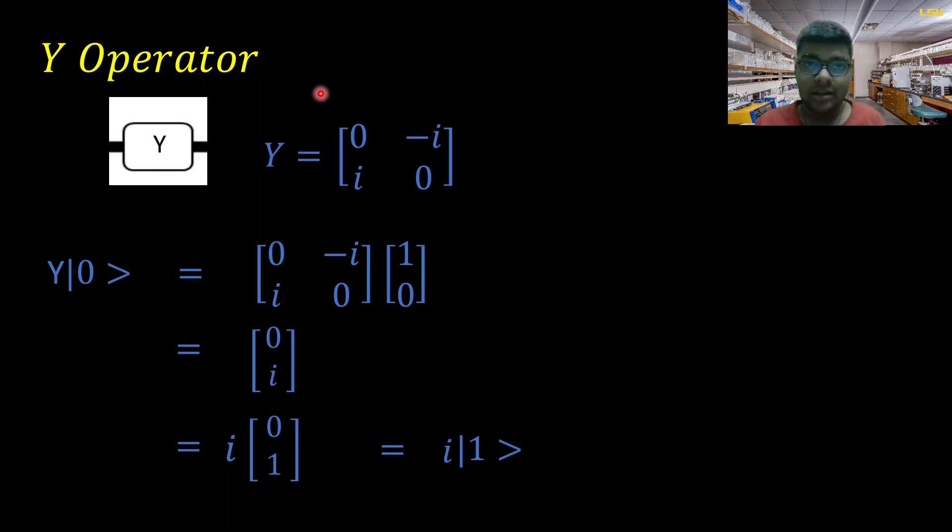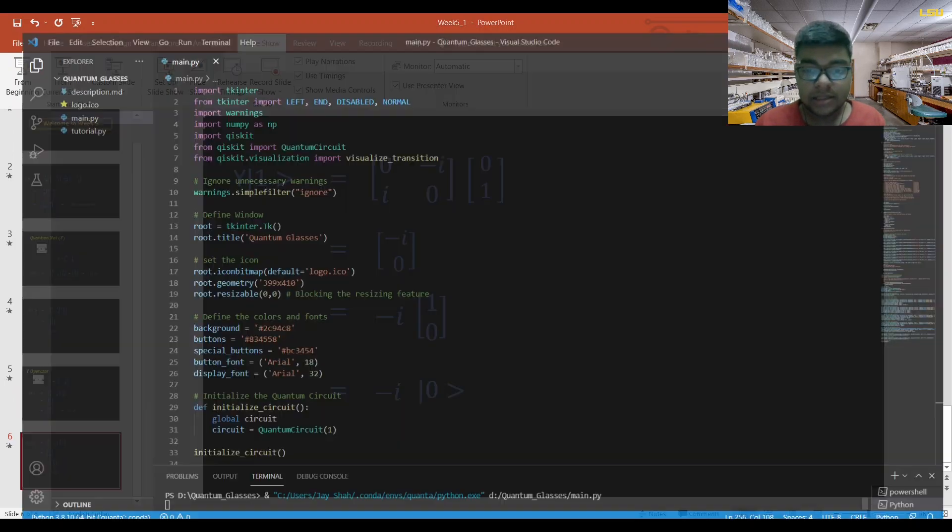I'll leave you with a question this week, but first let's also apply the Y operator on the |1⟩ state. Substituting the matrix and vector, we carry out the multiplication and get this state. We can write it as -i times the |0⟩ vector. I expect you should look at the visualization coming up to understand the significance of that negative i. Now let's jump to the VS Code visualization app.